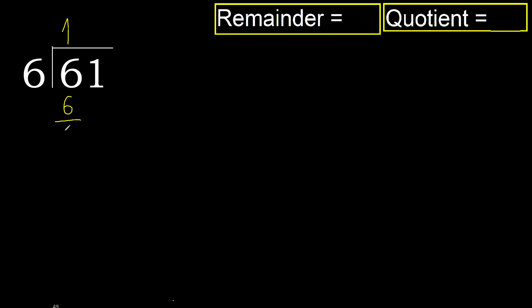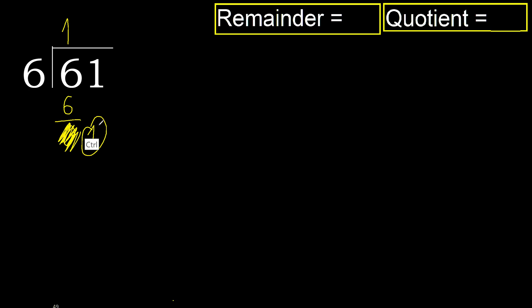6 minus 6 is 0. Next. Eliminate 0 on this side. 1 is less, therefore next.